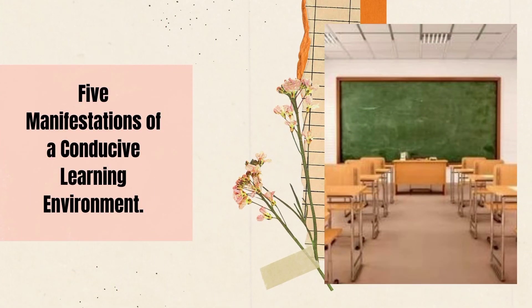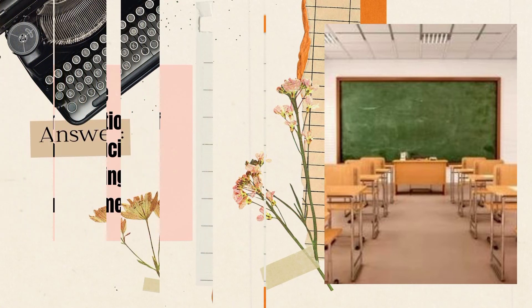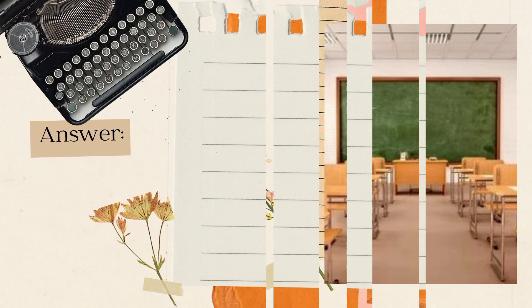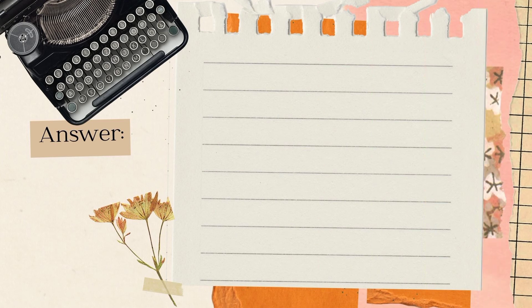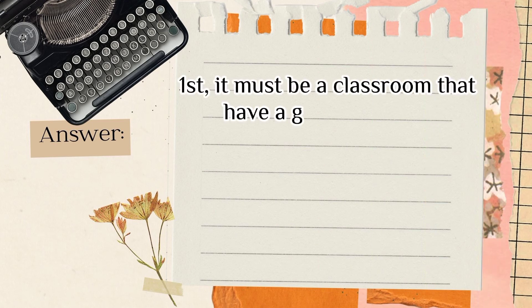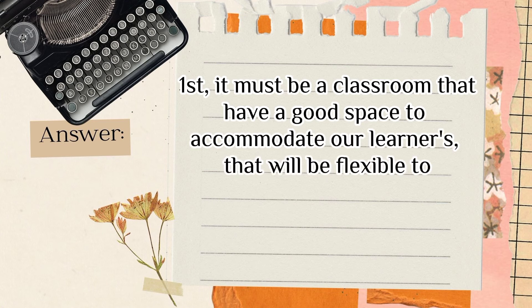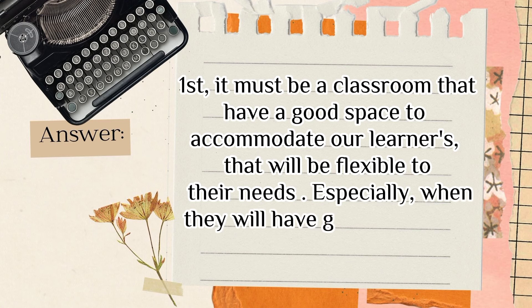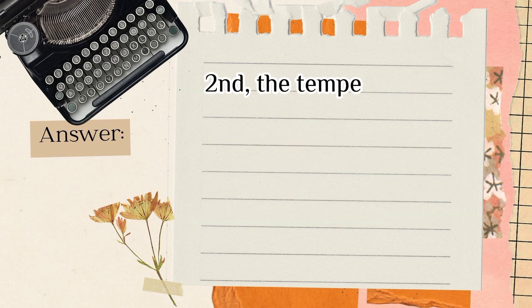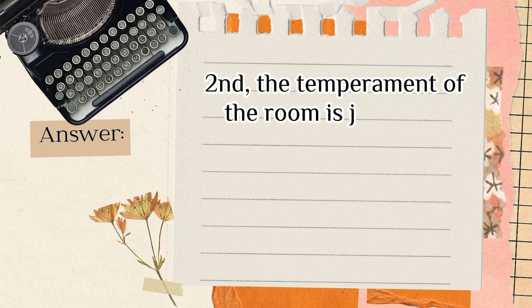The third and last question covers the five manifestations of a conducive learning environment. First, it must be a classroom that has good space to accommodate learners, flexible to their needs especially during group activities. Second, the temperature of the classroom should be mild — not too hot or too cold.